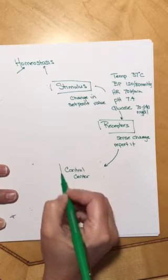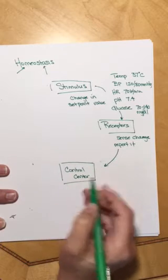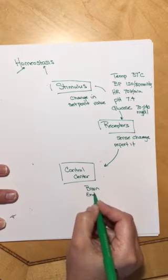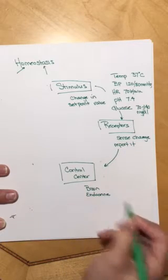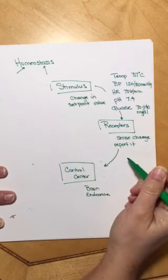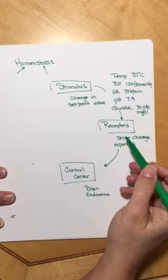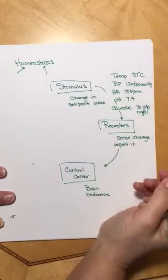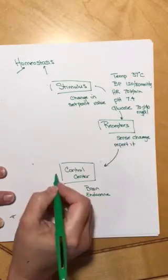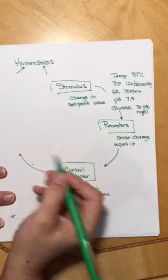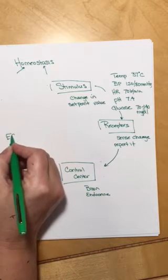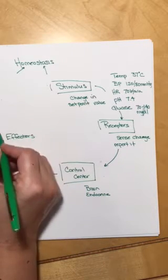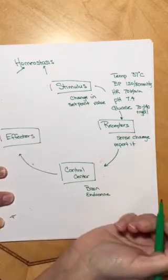The control center is oftentimes the brain, but not always — sometimes it's an endocrine organ. Whatever part of the body it is, it's the part that can get the information that there's been a change, a stimulus, and it's going to direct another part of the body called the effectors to do something about it.